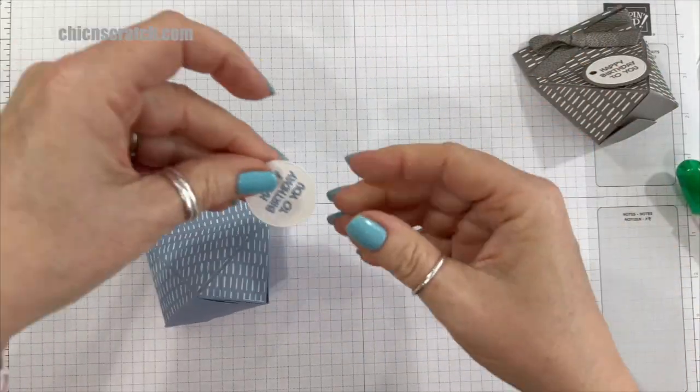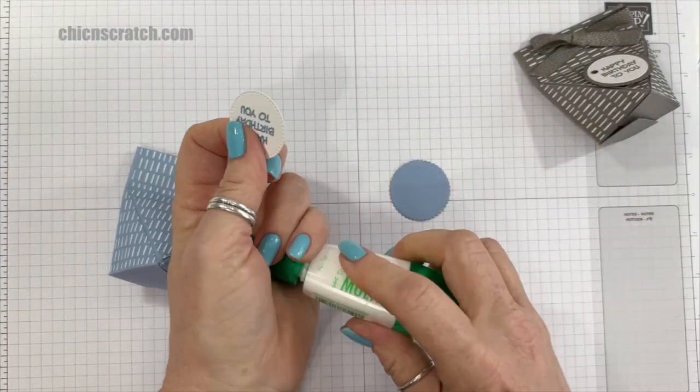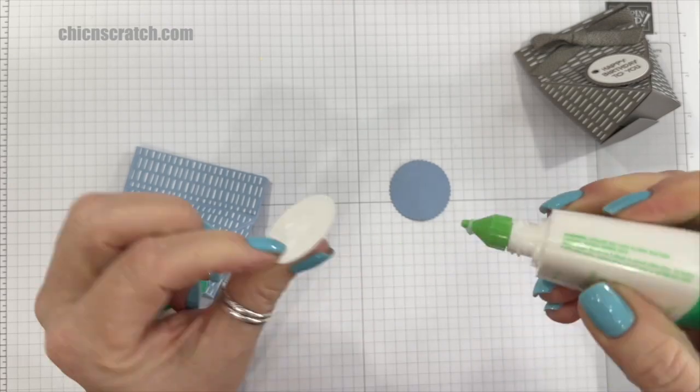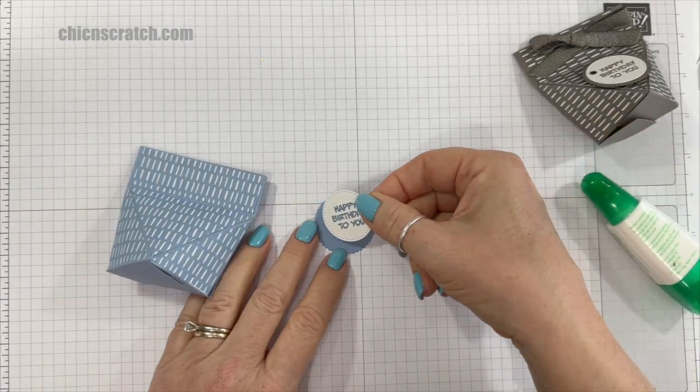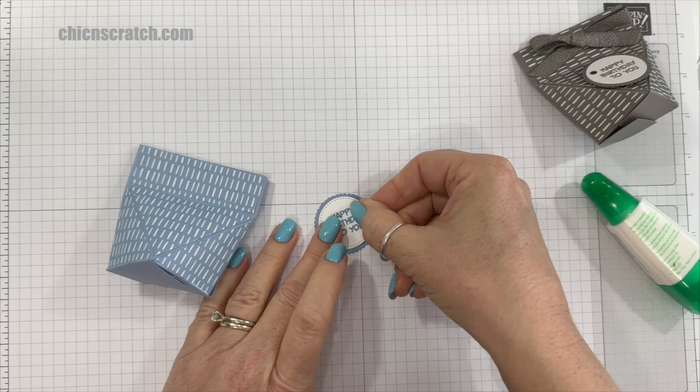Okay, I'm going to add the circle to the scallop circle with liquid glue. Now the Stylish Shape dies which cut this circle out, those are sticking around, but the scallop circles, which is in the Layering Circles, that is retiring.